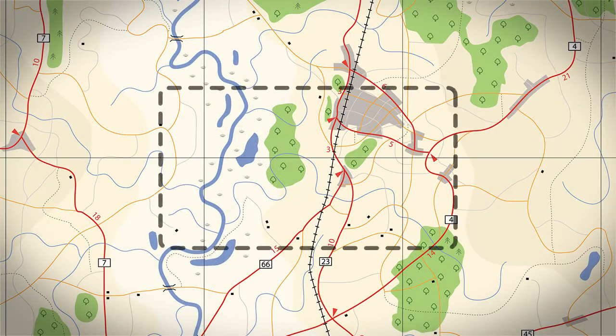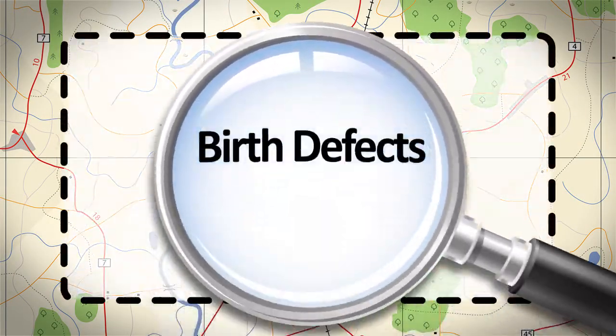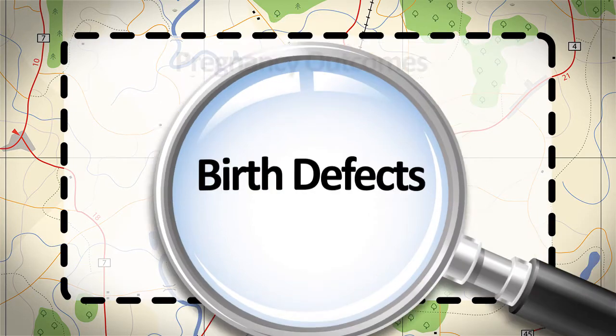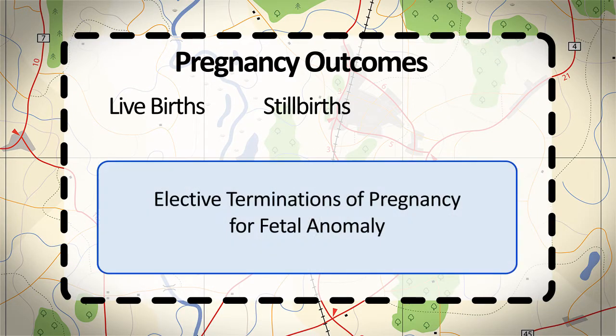Birth defect surveillance programs aim to include birth defects among all pregnancy outcomes, including live births, stillbirths, and elective terminations of pregnancy for fetal anomaly, which is abbreviated as ETOPFA or ATOPFA.